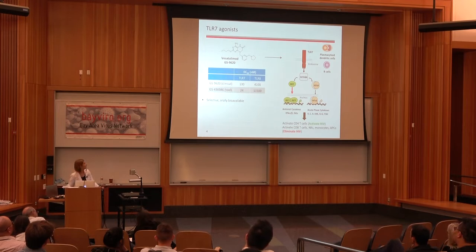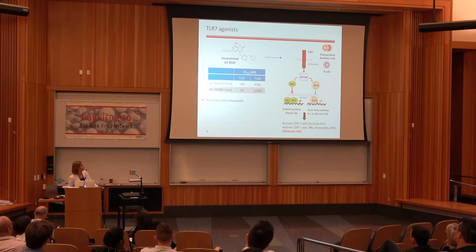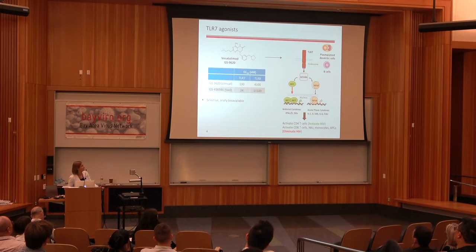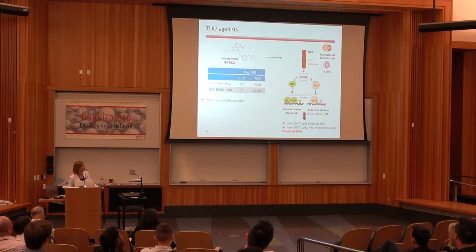This is the star of the show, our TLR7 agonist — the chemical structure shown on the top left is a molecule called GS9620, and I'll also refer to our precursor tool compound GS436986. TLR7 is a pattern recognition receptor expressed predominantly in plasmacytoid dendritic cells, and signaling through this receptor leads to the production of a variety of cytokines — interferon alpha being the primary, but also acute phase cytokines.